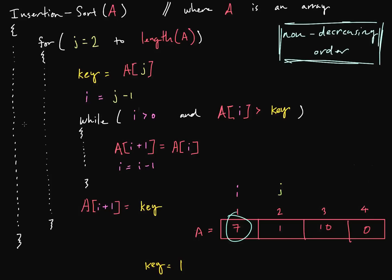Now we have this while loop. Basically what this while loop is doing: while there are still elements left to compare, and the element that we're currently at in the sorted sub-list is greater than our key value, we are going to shift this value to the right in our array. Then we're decrementing our i value to check the next one.